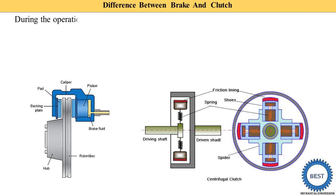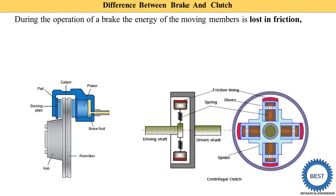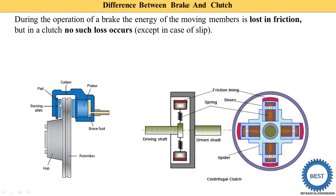The third difference: during the operation of the brake, the energy of the moving member is lost in friction. When we apply the brake, friction is produced and energy is lost. In a clutch, no such losses occur except in the case of slip — meaning in a clutch, no energy loss occurs under normal operation.